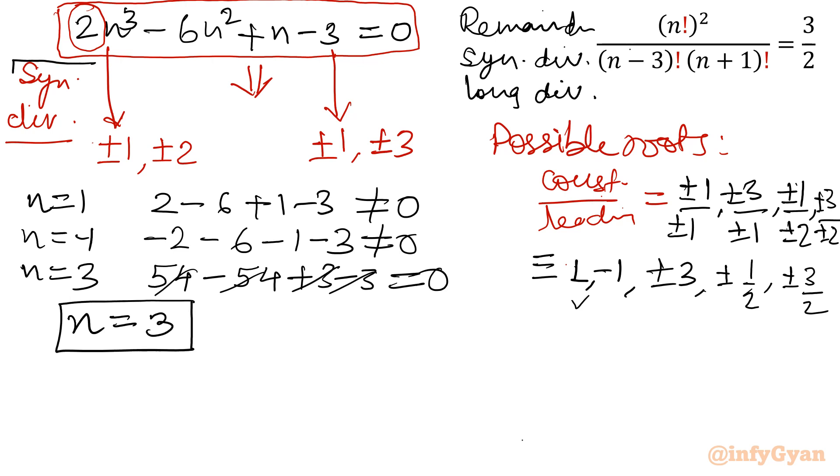Now using synthetic division method, I will find out the remaining 2. Let us find out n equal to 3. Let me write all the coefficients of the cubic equation: 2 minus 6, 1, minus 3. First term as it is 2. Now we will multiply 3 into 2, 6, so 0, 3 into 0, so 0. Now it will be 1, 3 into 1, so 3, 0. So the coefficients left 2, 0 and 1.